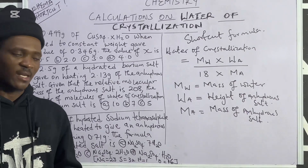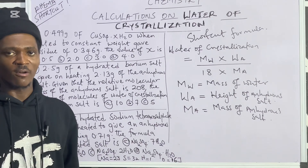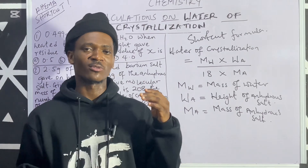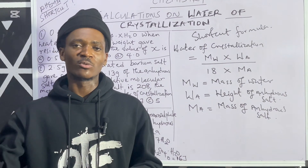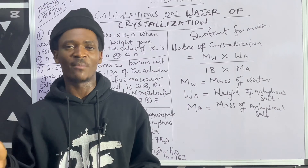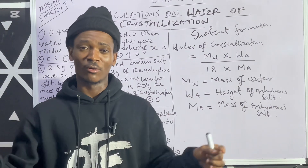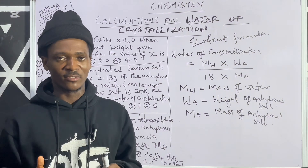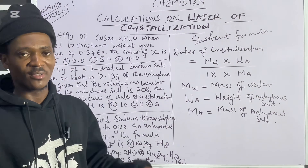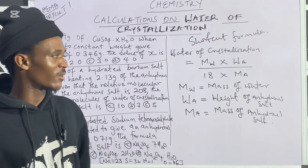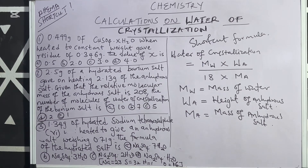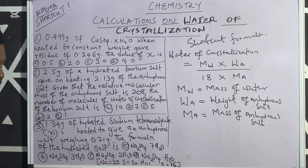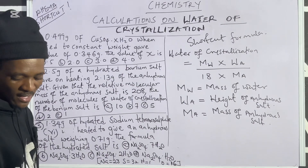This is a shortcut formula you can use to attempt questions on water of crystallization, as opposed to the normal conventional way where you have: mass of anhydrous salt over mass of hydrated equals molar mass of anhydrous over molar mass of hydrated. That one is a long cut — just use this shortcut formula and you'll be able to attempt questions in a few seconds. On the board we have three questions.